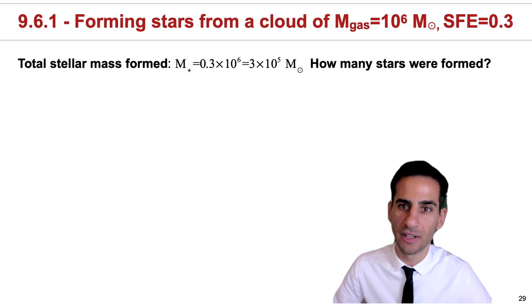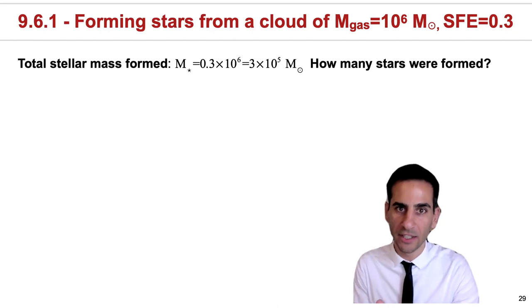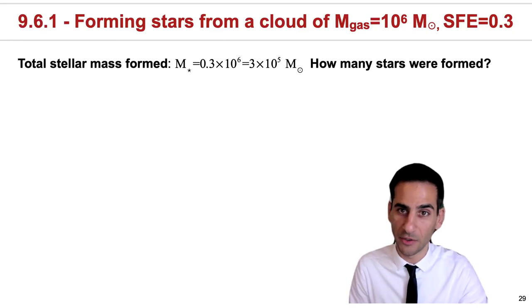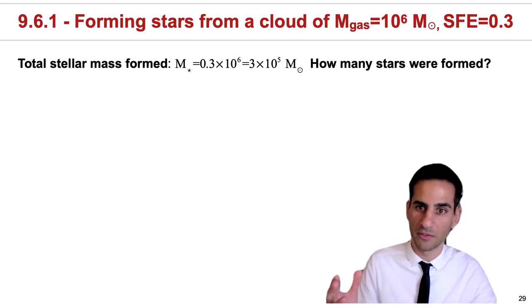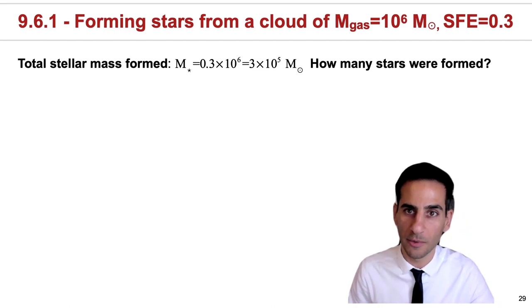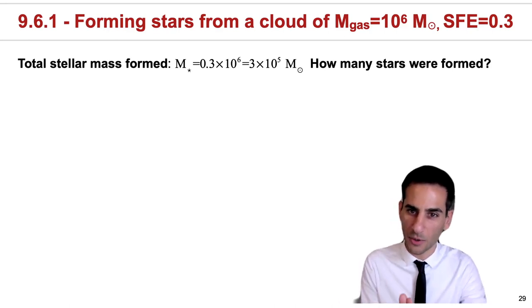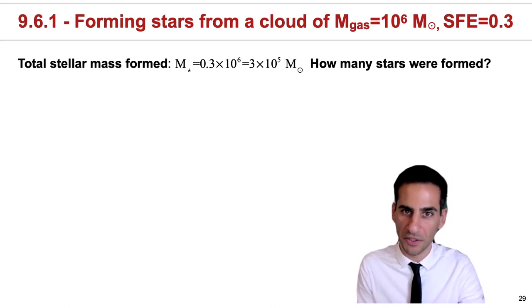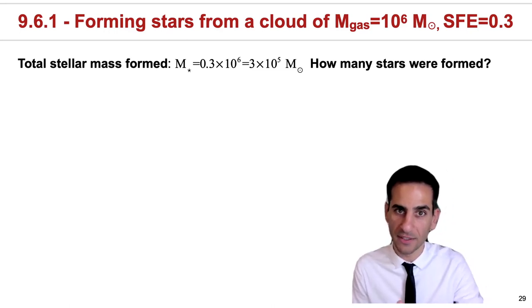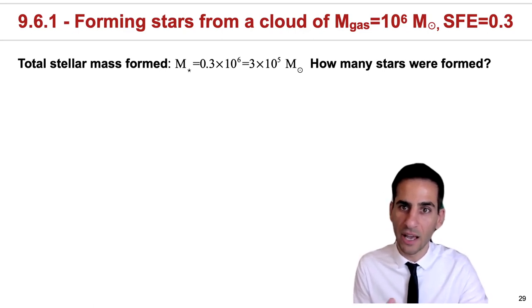As an example of an application—and remember you don't need to memorize that expression directly, you can just start from the power law and integrate, which would be my recommendation—let's say we're looking at a cloud of gas with 10^6 solar masses where 30% got transformed into stars. Therefore the total stellar mass is 3×10^5 solar masses. The question we could address is: how many stars were actually formed when this process happened?